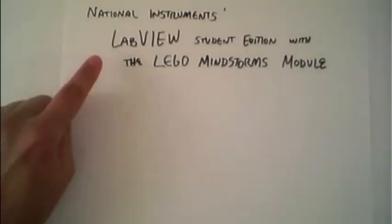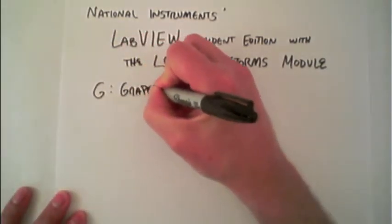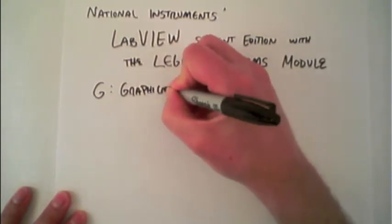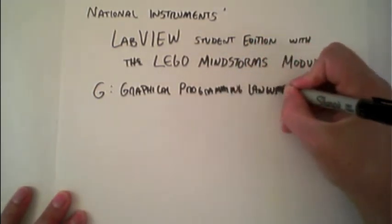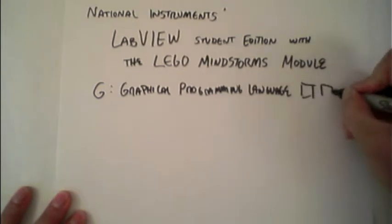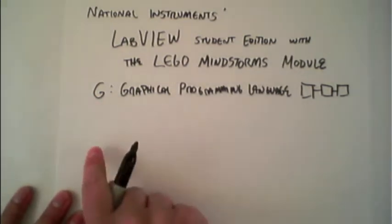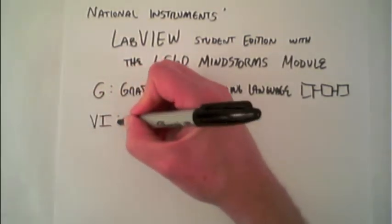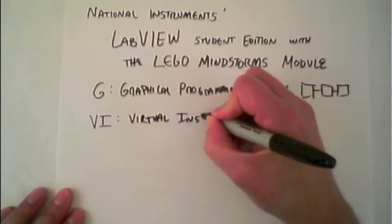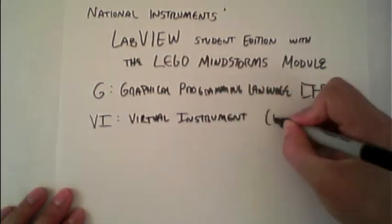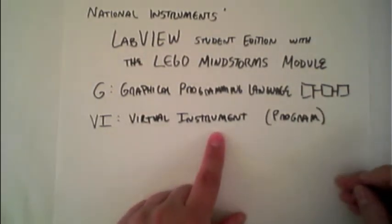When you write code within LabVIEW, the code you're writing is called G. This is the graphical programming language. G consists of a series of functions that are connected together by wires. Each program that you write is called a VI, which stands for Virtual Instrument — a virtual version of a scientific instrument.